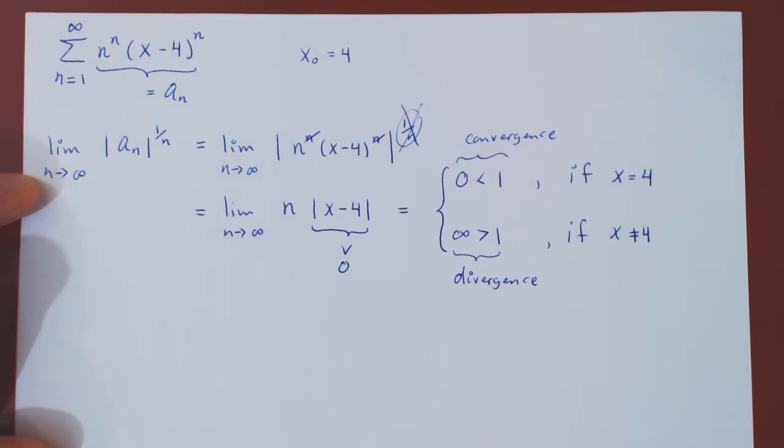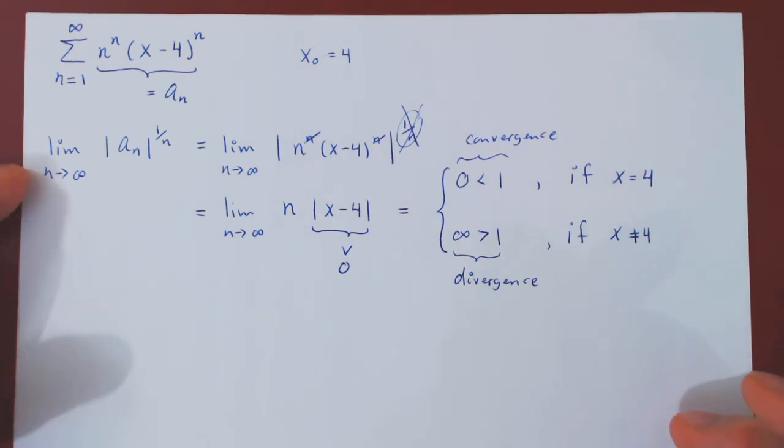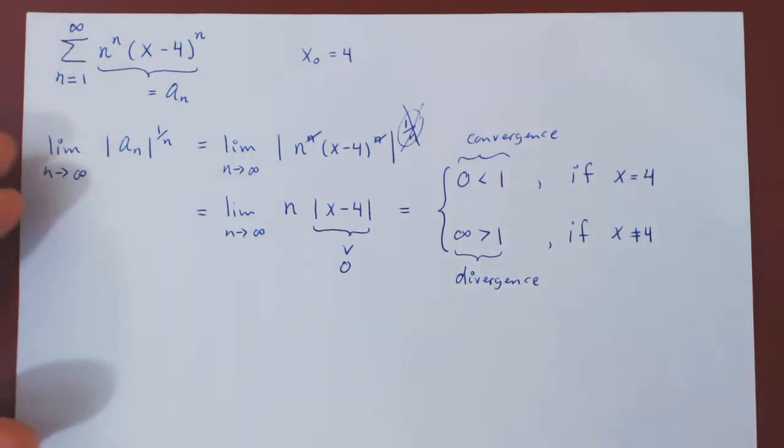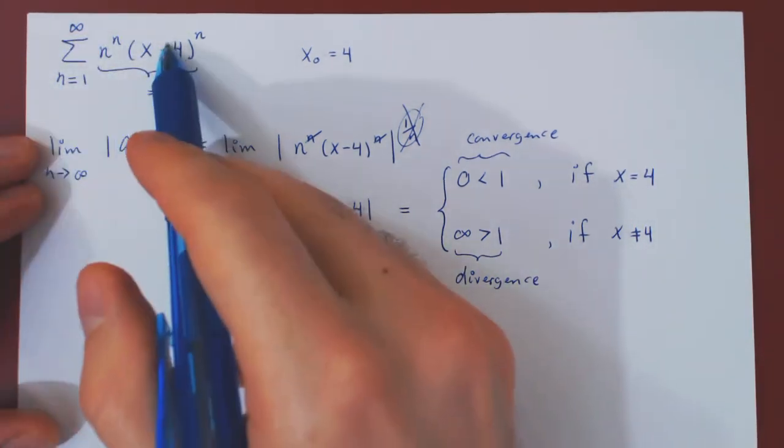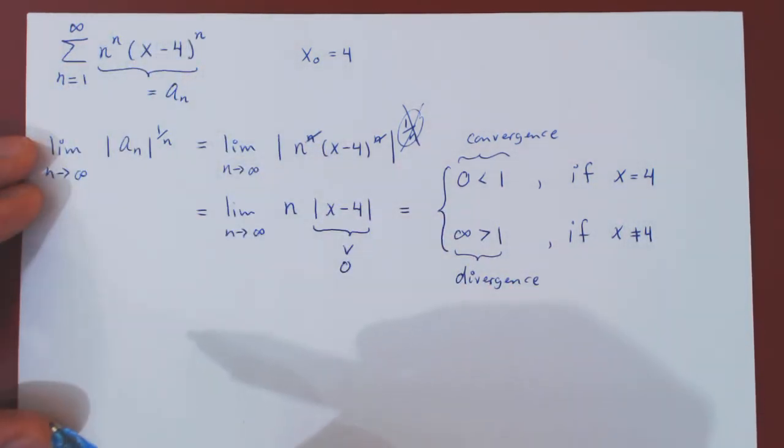So the power series only converges for one value, namely its center. Which is why I say it is a nightmare power series, because it's only a function at one point on the real line. So this is rather a boring power series.